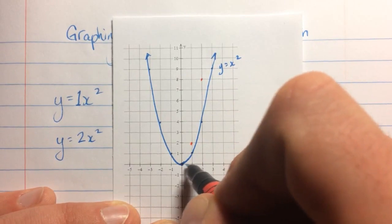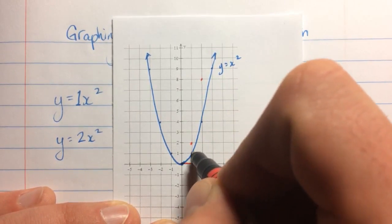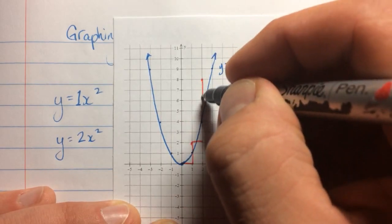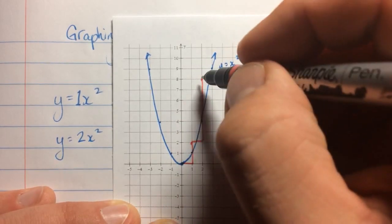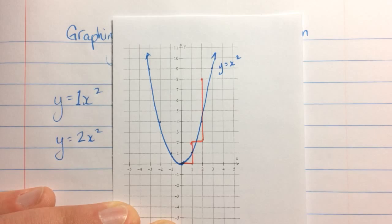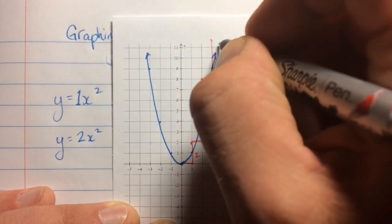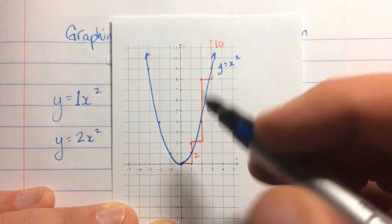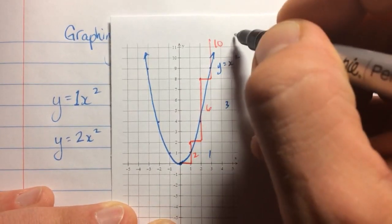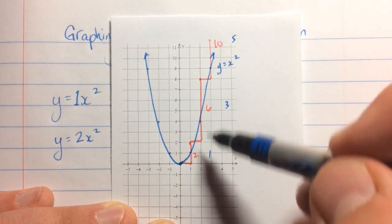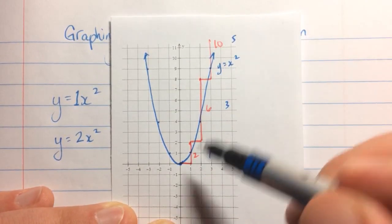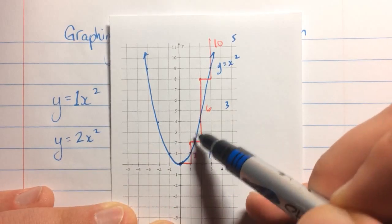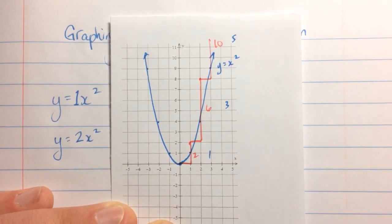Let's look at what the effect is on the step pattern. Over 1 and up 2, over 1 and up 6, and then over 1 and up 10. The old pattern was 1, 3, 5, and so on. The new pattern is 2, 6, 10 — it's exactly twice as much. This number 2 not only affects where each point is, it has the same effect on our step pattern as well.